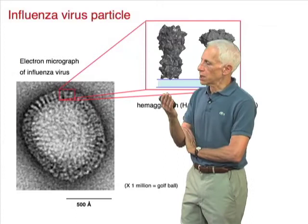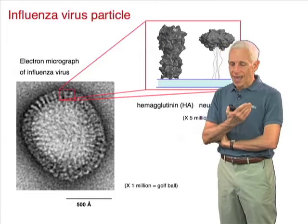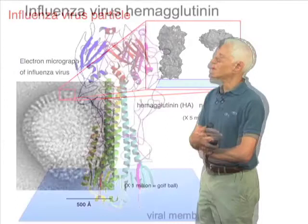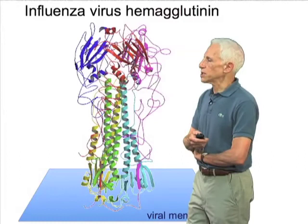The hemagglutinin is the protein that undergoes a low pH-triggered conformational rearrangement to drive fusion. We'll be hearing quite a lot about that in the next part. The hemagglutinin, shown here, is a spike-like structure, as I mentioned.